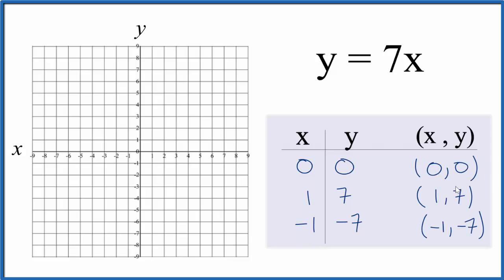So these are the points that we'll graph for the equation y equals 7x. So let's start off with 0, 0. x is 0, y is 0, that's right there. So that's our first point.